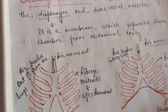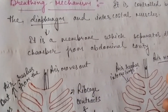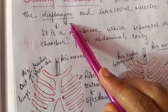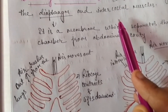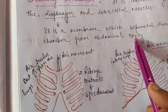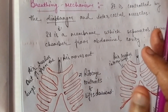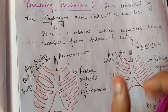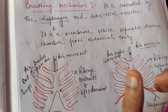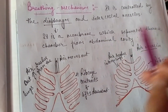Breathing involves two processes: inhalation and exhalation. Breathing is controlled by the diaphragm and intercostal muscles. The diaphragm is a membrane which separates the thoracic chamber and the abdominal cavity. The thoracic chamber is the chest cavity where the lungs are located.